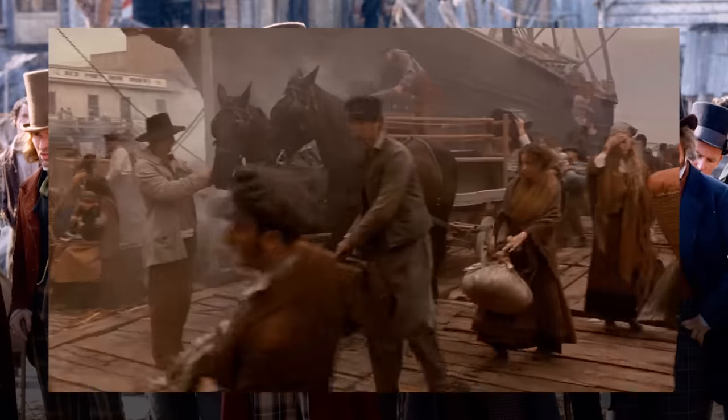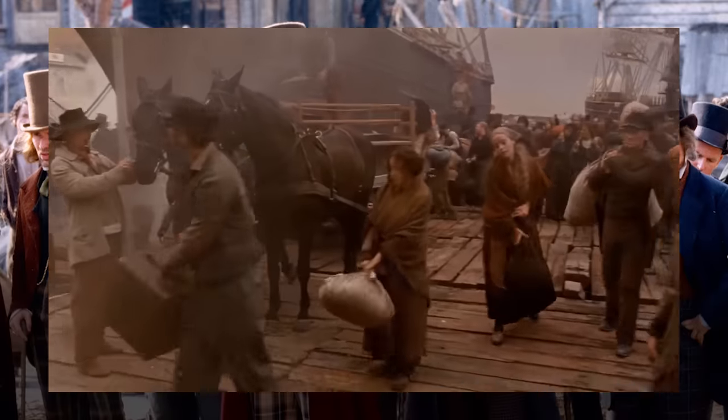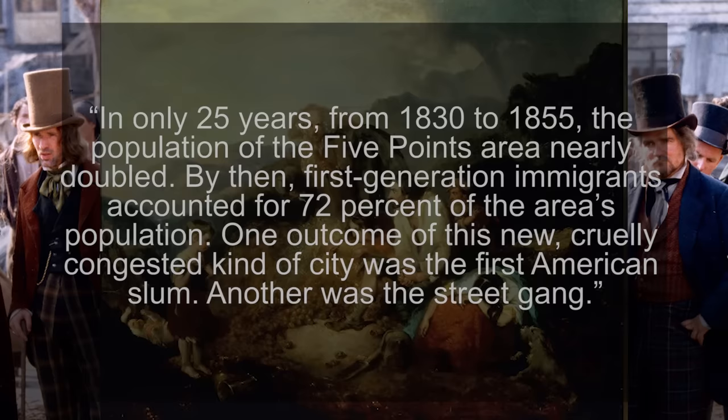The Irish were also predominantly Catholic, heading to a nation that was heavily Protestant. To quote Fergus Bordowicz: 'In only 25 years, from 1830 to 1855, the population of the Five Points area nearly doubled. By then, first-generation immigrants accounted for 72% of the area's population. One outcome of this new, cruelly congested kind of city was the first American slum. Another was the street gang.'